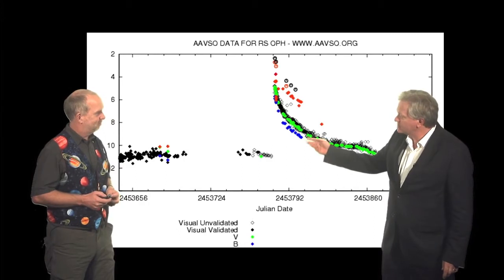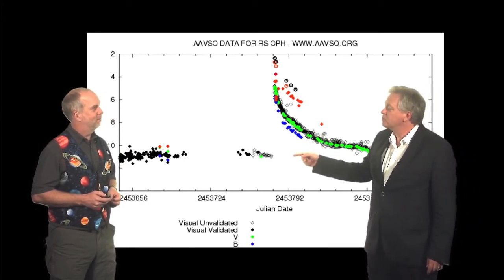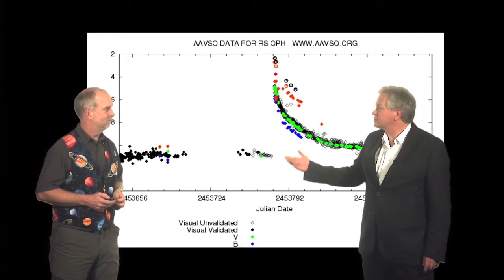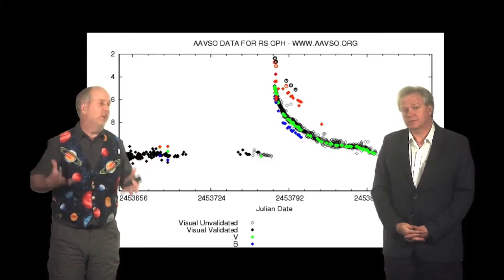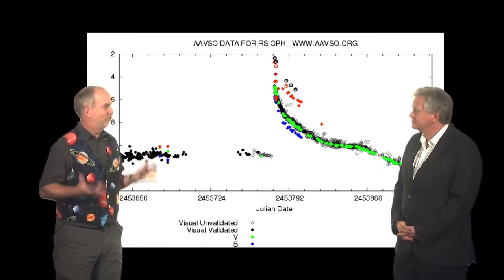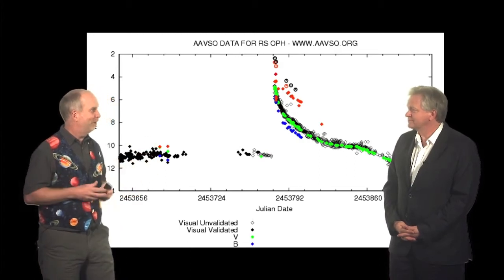Yeah, and the interesting thing about this is this object doesn't repeat every month. It repeats every 20 years or so, and some of them repeat after hundreds of years. In fact, the definition of a classical nova is it doesn't repeat. Of course, they probably do repeat, it's just that we haven't been observing long enough to see them repeat.